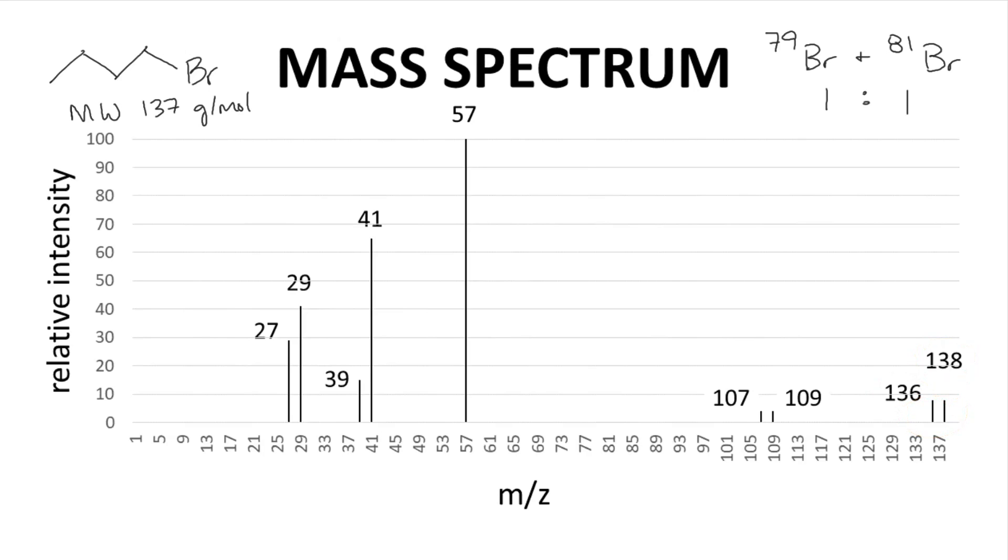Bromine-79 is slightly more prevalent, so the m/z peak at 136 is technically the nominal mass of the parent ion. And the peak at 138 is called the M+2 peak.